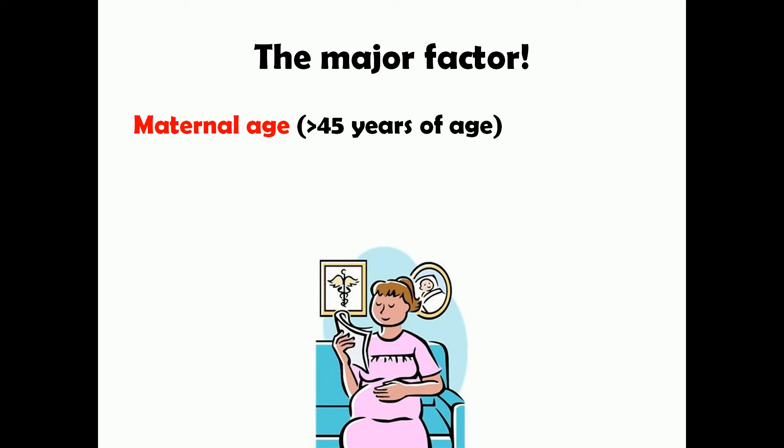So if you encounter a pregnant woman who is above the age of 45, you need to suspect there are higher chances of her baby developing Down syndrome, and you need to screen her fetus for that.